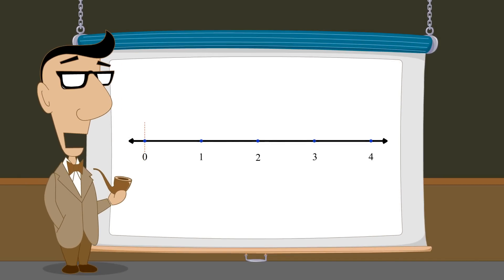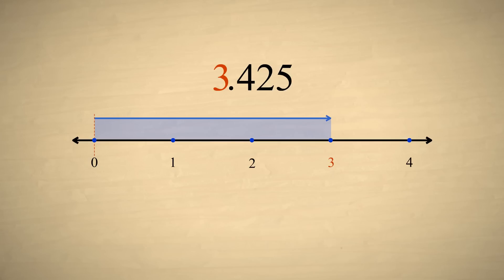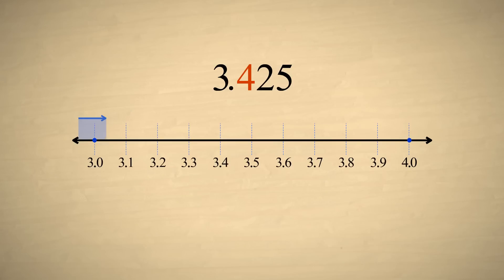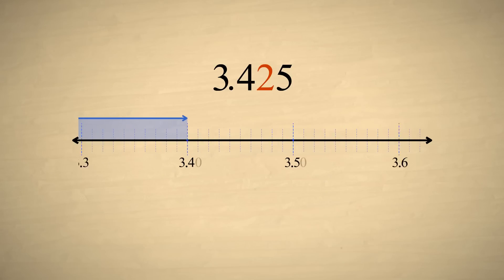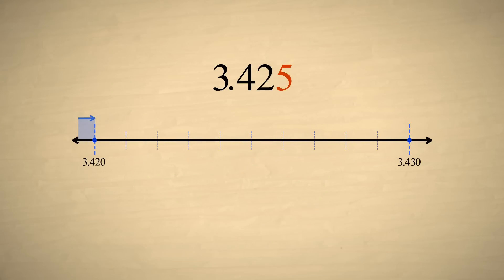Using a number line, we can see how each digit adds different size divisions to the number. For example, the decimal number 3.425 represents three units, plus four-tenths of a unit, plus two-hundredths of a unit, plus five-thousandths of a unit.